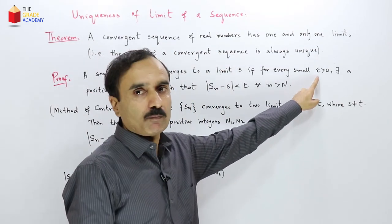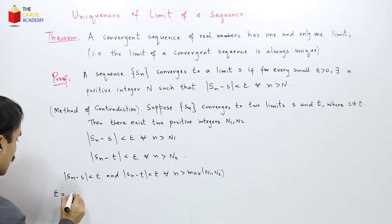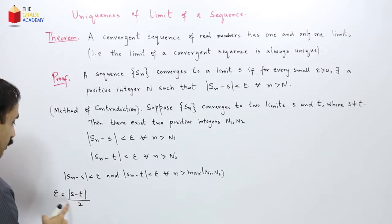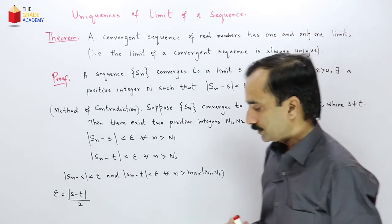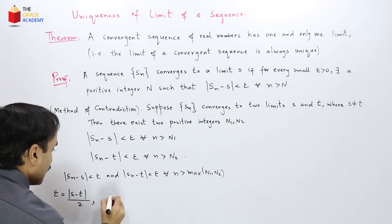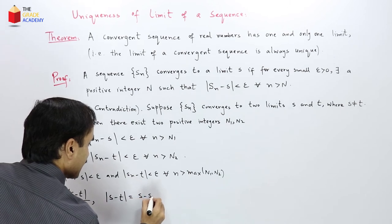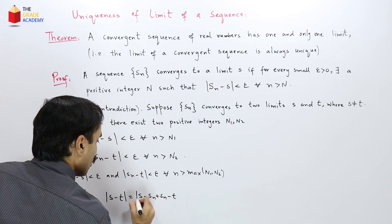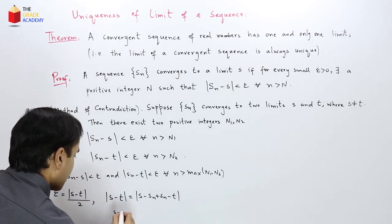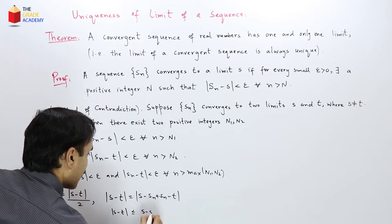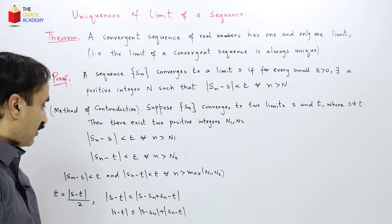Now epsilon is some small positive real number. Let us choose epsilon equal to |S − T| / 2, which is a positive real number since S ≠ T. We then consider |S − T|, which can be written as |S − S_n + S_n − T|. By the triangle inequality, this is less than or equal to |S_n − S| plus |S_n − T|.